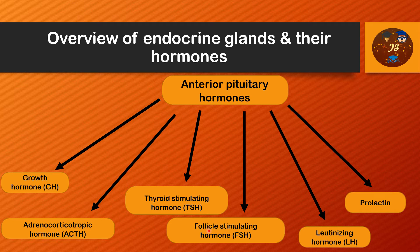Next is follicle stimulating hormone, or FSH. It causes growth of the follicles in the ovaries in females prior to ovulation, and also promotes formation of sperm in the testes. Following that is luteinizing hormone, or LH, which plays a very important role in causing ovulation and also causes secretion of female sex hormones by the ovaries and testosterone by the testes.